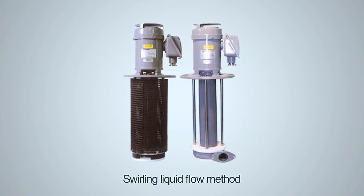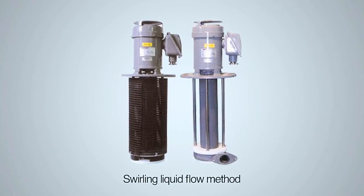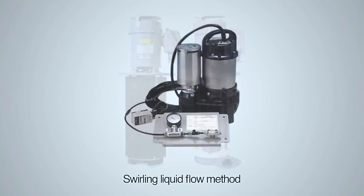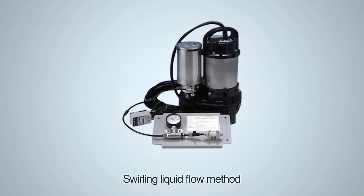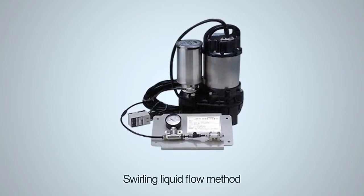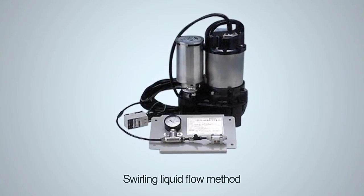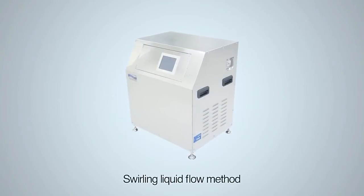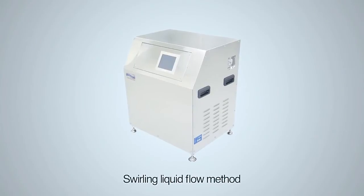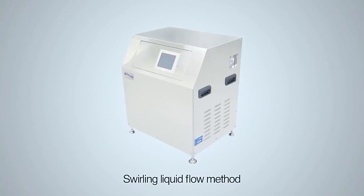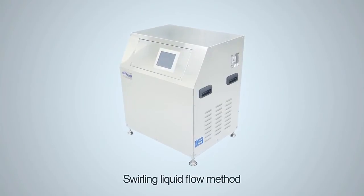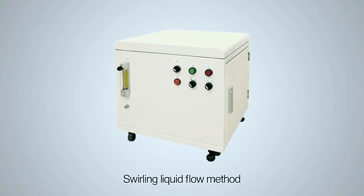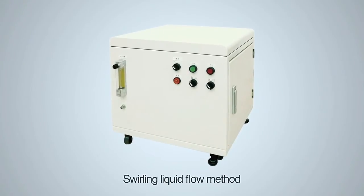A high-speed swirling liquid flow method swirls gas at high speed to generate large numbers of fine bubbles and ultrafine bubbles, then separates the fine bubbles by a flotation process so that only the ultrafine bubbles remain in the liquid. And there's also an ejecting method.